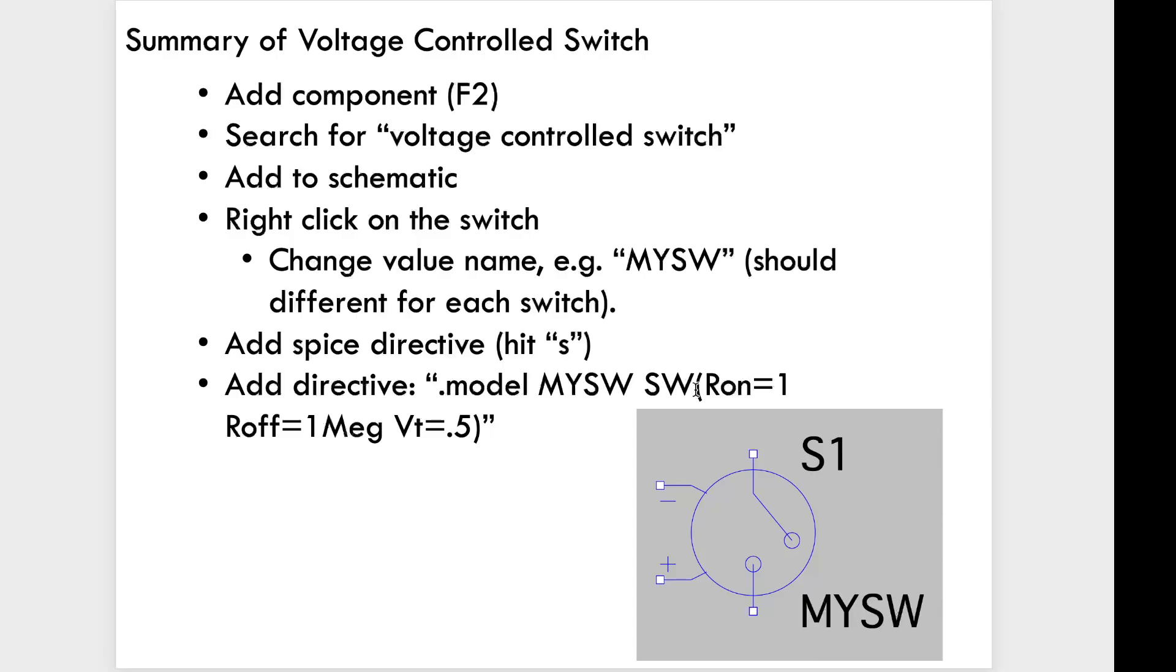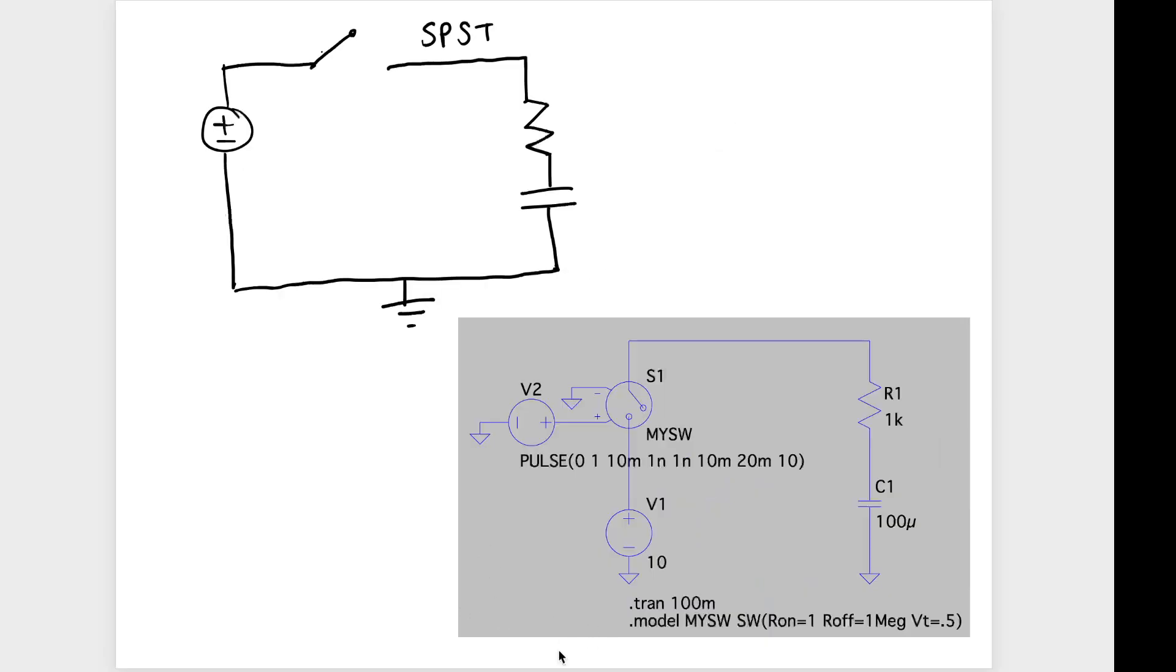And then you have SW because this is a SW switch model. And you're going to need at least the following things, an R-on, an R-off, and a voltage threshold. There's more that you could add. I'll leave it to you to look in the help to change those things. So let's see what this might look like in an actual circuit.